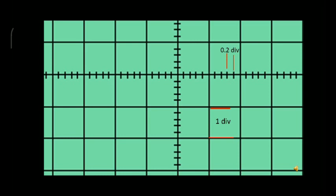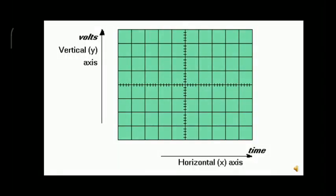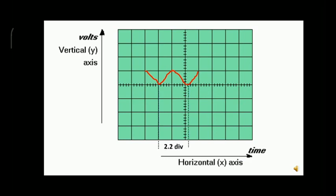Once again, the separation between two small lines is 0.2 division and the side length of each small square is one division. For an example, let's measure the peak-to-peak vertical length of a signal — it is two divisions. And the peak-to-peak horizontal length of this signal is 2.2 divisions.